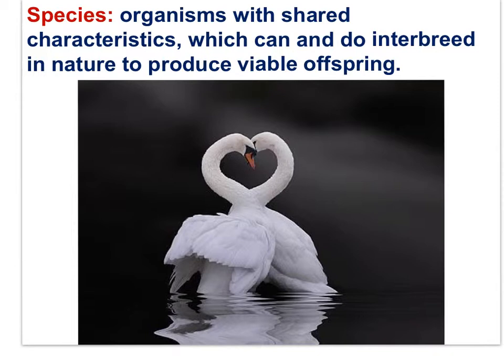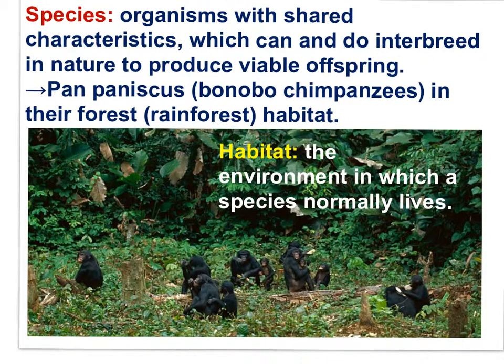The production of viable offspring is an important part of the definition. In this image, we have swans of the genus Cygnus. Here we have a population of Pan paniscus, bonobo chimps, as a single species — an interbreeding group of organisms with shared characteristics producing viable offspring. Pan paniscus lives in the equatorial rainforests of Central Africa. This is their habitat as the environment in which a species normally lives.